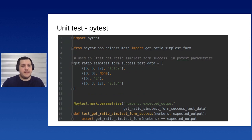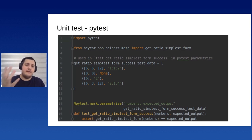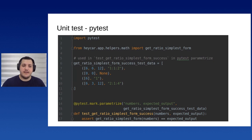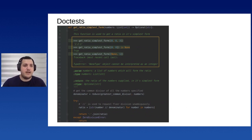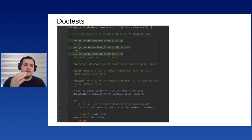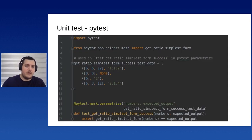Moving to unit tests — this is a simple example where we're testing the previous function. We want to verify that given a list of numbers, the ratio output is correct. The function converts a list of numbers into their simplest ratio form.